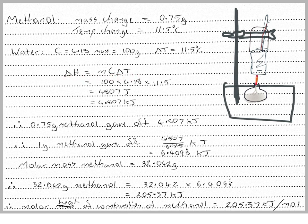We used delta H equals MC delta T. So we have 100 (the mass) times 4.18 (the heat capacity of water, capital C) times delta T, which is 11.5 degrees. This gives us 4,807 joules, which equals 4.807 kilojoules.